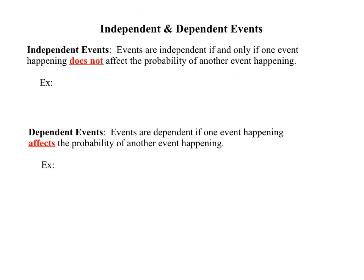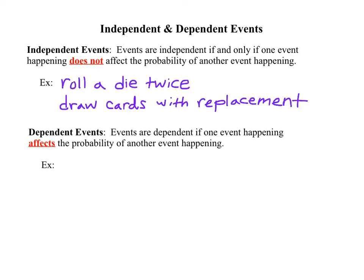Next, we're going to talk about calculating probabilities for both independent and dependent events. First, we need to understand the difference between them. Events are independent if and only if one event happening does not affect the probability of another event happening. Examples of independent events include rolling a die twice — whatever you roll on the first roll does not affect the second or third roll.